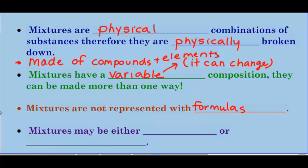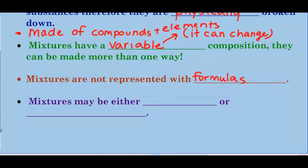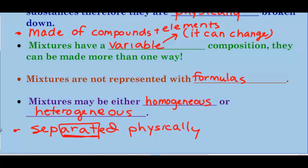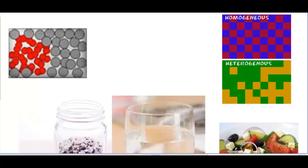The third dot, mixtures have a variable composition. And then this is the fourth dot here. Mixtures may be either homogeneous or heterogeneous. And since mixtures are physically combined, they can be separated physically. That's your last dot. A word about spelling separated. It is a-rated, not a-rated. Like we always say it wrong. But there's a rat in the middle of separated. I'm spelling it correctly. Usually people spell it wrong.